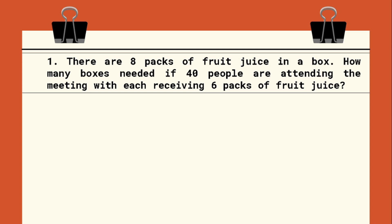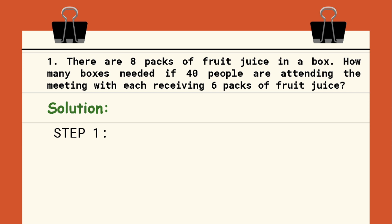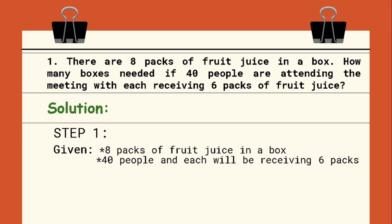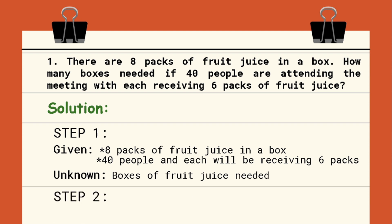Let's start with Example 1. There are 8 packs of fruit juice in a box. How many boxes are needed if 40 people are attending the meeting with each receiving 6 packs of fruit juice? Step 1: we will first determine the given. We have 8 packs of fruit juice in a box, 40 people, and each will be receiving 6 packs. We are about to find the number of boxes of fruit juice needed. Step 2: we will derive an expression based from the given, which is the quantity of 40 times 6 divided by 8.